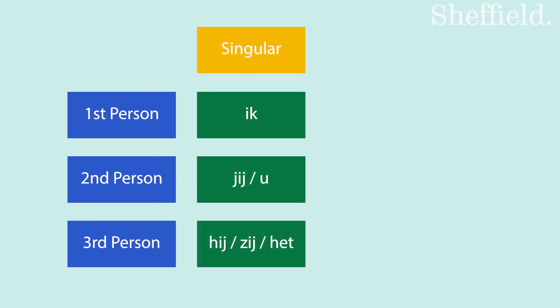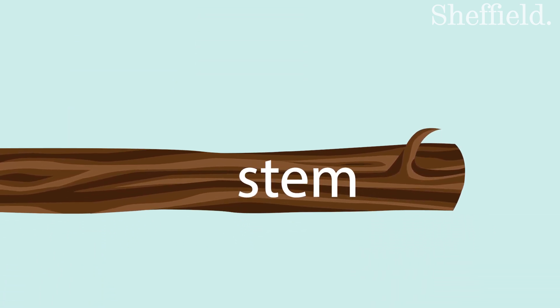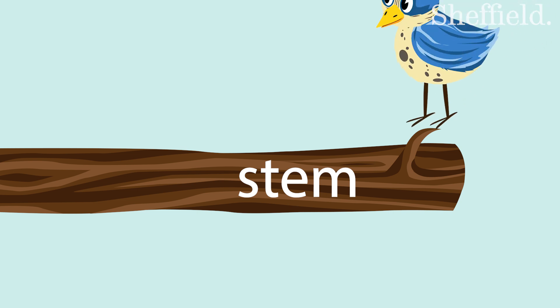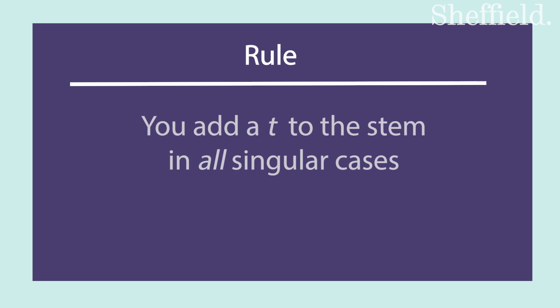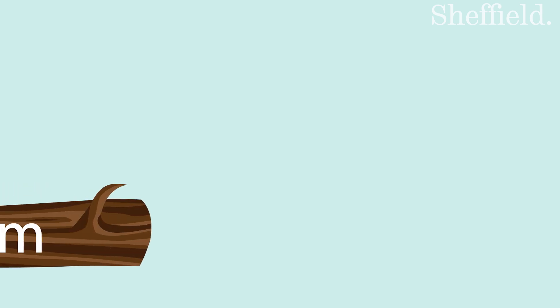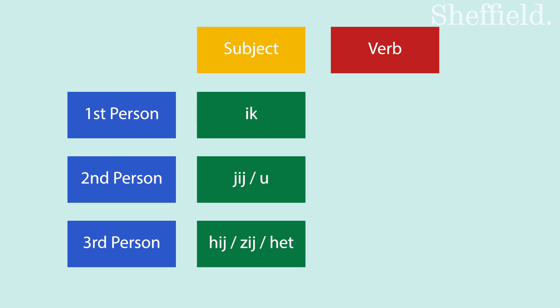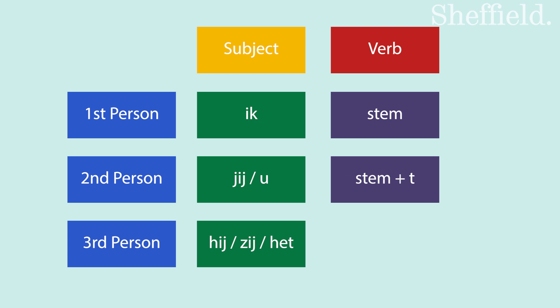With the plural forms out of the way, let's look at the singular forms. For the singular, we first have to find the so-called stem of the verb. Once we have the stem, we add the ending. Rule: you add a T to the stem in all singular cases, except for first person. In the case of ik, you just use the stem. So ik is just the stem, jij and u is stem plus T, and hij, zij, het is stem plus T.